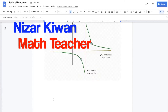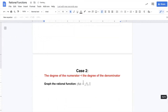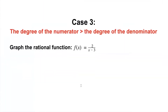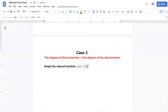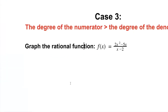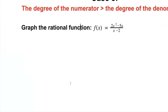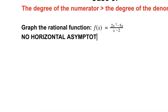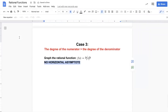Now case three — it's the opposite of case two. The numerator is greater than the denominator. Up we have x power two, down we have x times x minus two. X power two minus five x: the numerator is degree two while the denominator is linear, so the top is greater than the bottom. In this case, there is no horizontal asymptote.